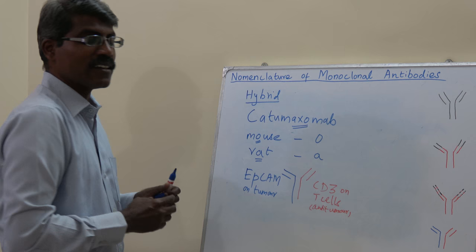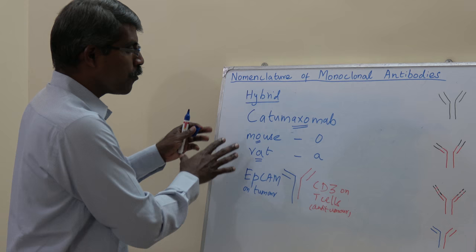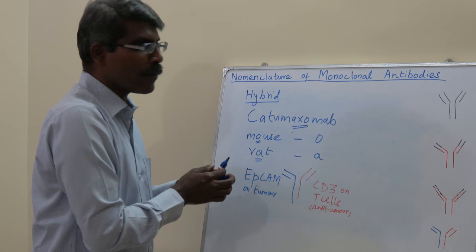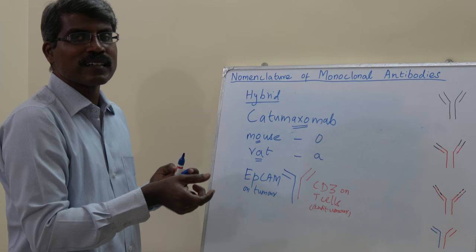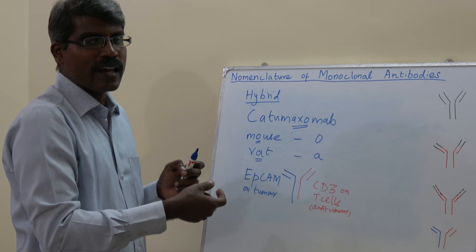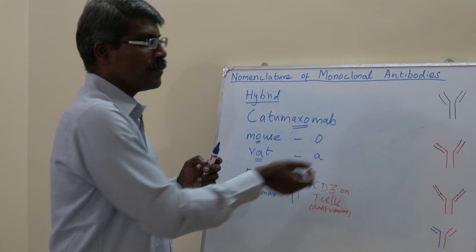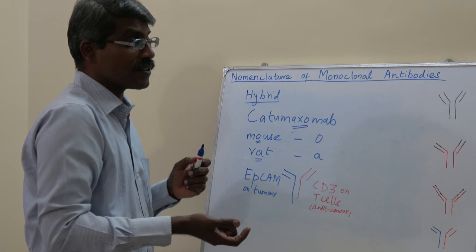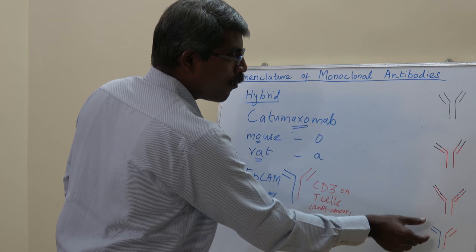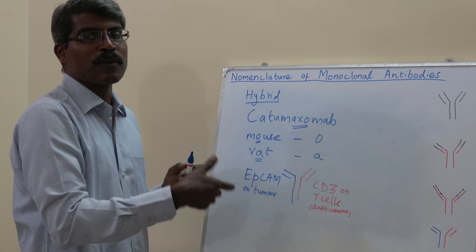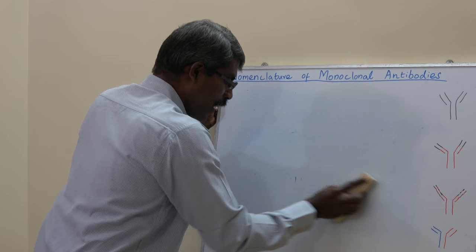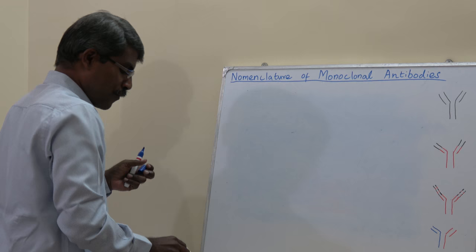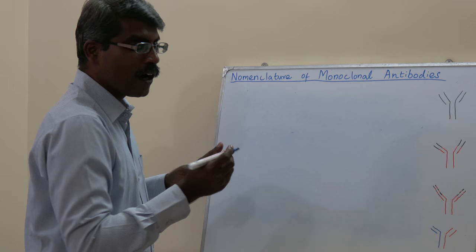To clarify the difference between chimeric and hybrid: chimeric has the variable part from murine and the constant part from human — the constant region is humanized to prevent development of anti-antibodies (immunogenicity). In a hybrid, one full heavy chain and light chain is from one animal, and the other from a different animal. These are distinct concepts with different nomenclature.